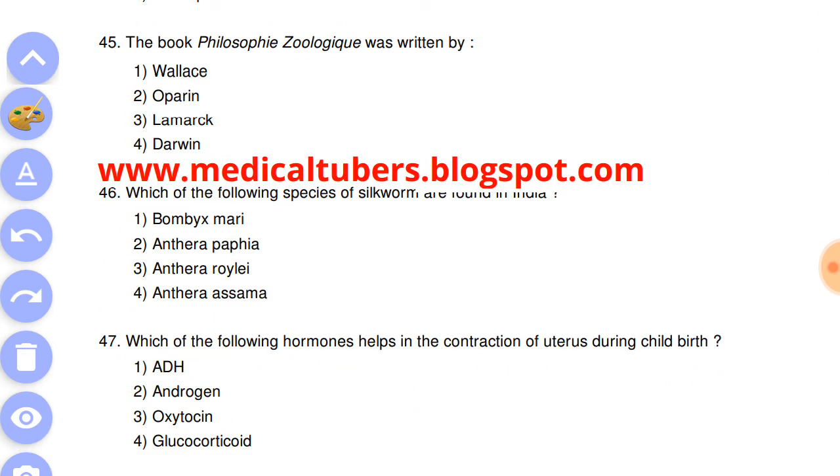Question number 45: the book Philosophy Zoologique was written by answer is the third, Lamarck. Next question: which of the following species of silkworm are found in India? Answer is the first, Bombyx mori.